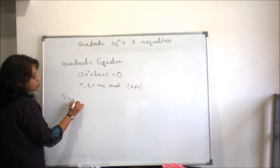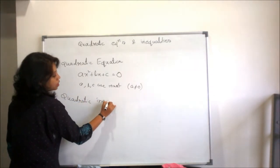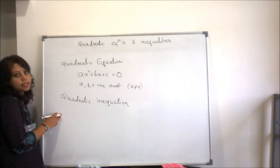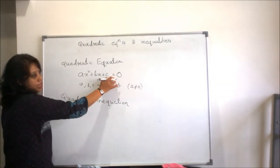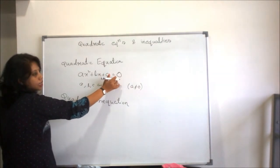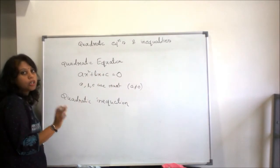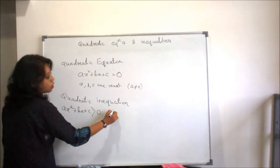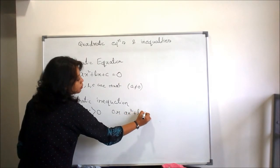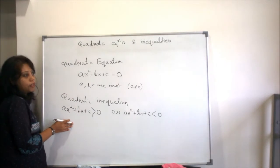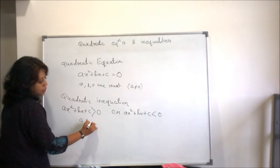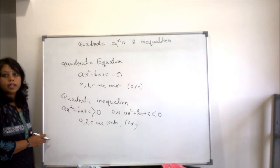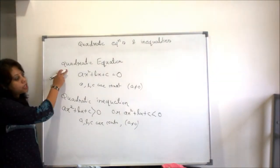Next is the quadratic inequation. In an inequation, there doesn't exist equality — instead there is inequality. Inequality means there must be either greater than or less than, not equal. So when our expression is ax² + bx + c > 0 or ax² + bx + c < 0, these are quadratic inequations. Similarly, a, b, c are constants and a is not equal to 0. So these are the quadratic expression, quadratic function, quadratic equation, and quadratic inequation.